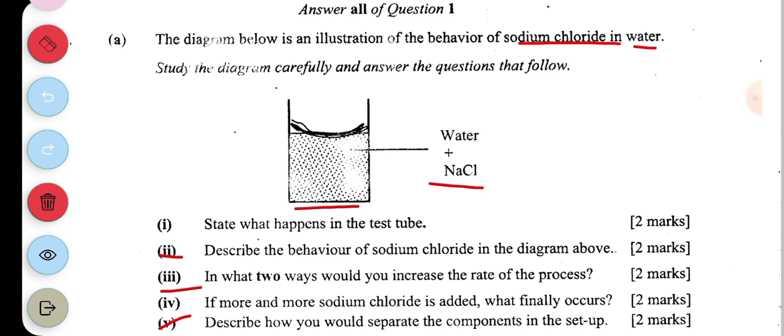Then the last question says describe how you would separate the components in the setup. Simply by evaporation or by heating the solution. Once the solution is heated, water is separated from the mixture in the form of vapor leaving the sodium chloride crystals behind.